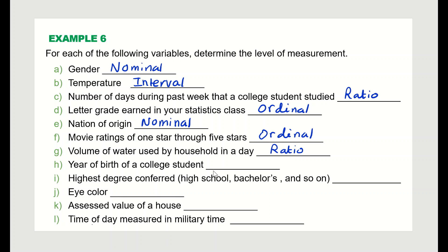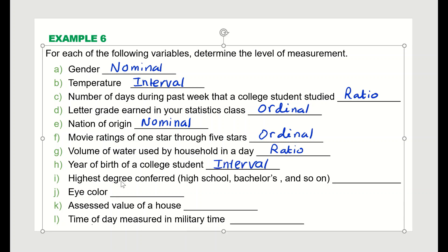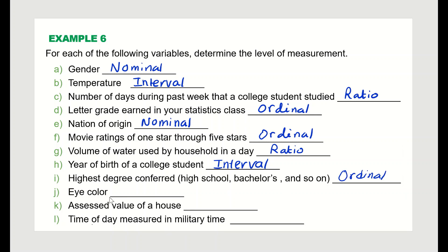Year of birth of a college student — like 1978 or 1963 — is a number representing time where zero is not a true zero, so that is interval. Highest degree earned — like high school, bachelor's, master's — is ranked, so that is ordinal. Eye color is purely categorical with no number, so that is nominal. Assessed value of a house is a pure number, so that is ratio. Time of day in military time is also a time measure, so that is interval.